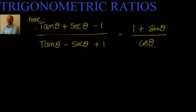So this is one of the problems. Prove: (tan θ + sec θ − 1) / (tan θ − sec θ + 1) = (1 + sin θ) / cos θ.